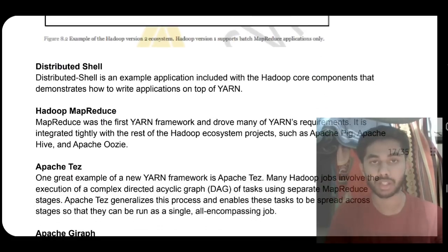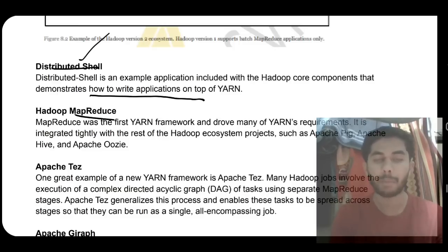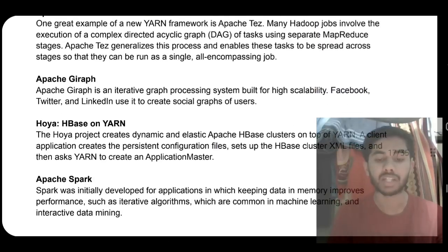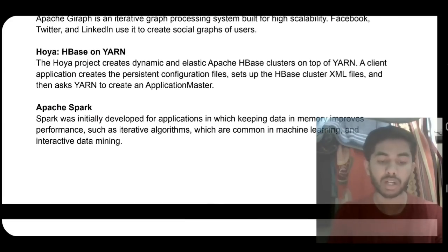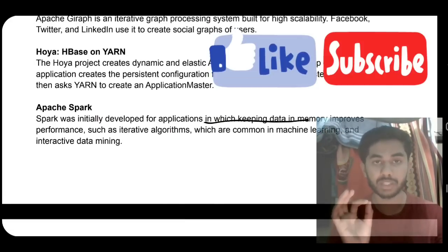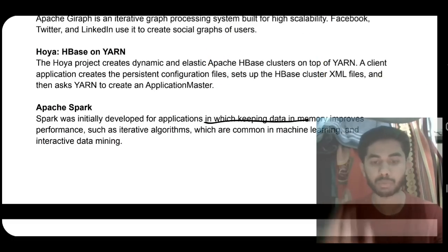Which use the YARN application? First is Distributed Shell, which demonstrates how to write applications on top of YARN. MapReduce we already discussed. Apache Tez is optimized MapReduce algorithm. Giraph is used for iterative graph processing. HBase is used for structured storage for setup of files. Spark is used for keeping data in memory, improves performance and iterative algorithms. This is used for better optimization of storage and processing.